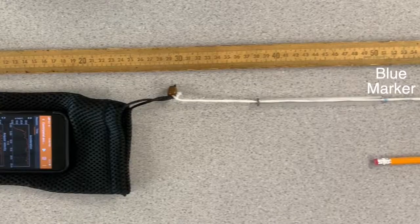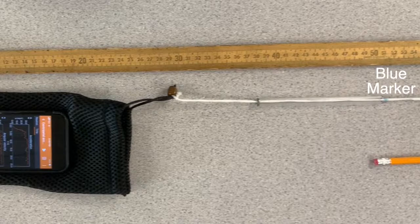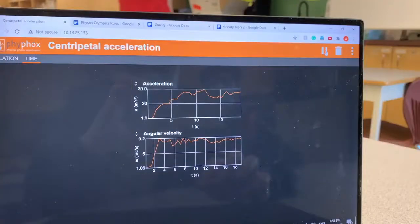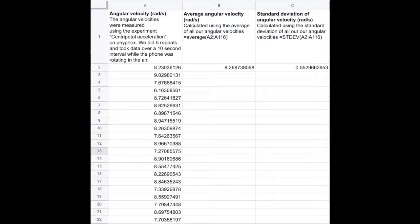Then mark a line somewhere along the string. While you spin your phone, make sure the glass tube remains on top of this mark to keep the spin consistent. We used centripetal acceleration on PhyPhox to find the angular velocity over time. We repeated this 5 times, averaged the result for our angular velocity, then used the standard deviation for our uncertainty.